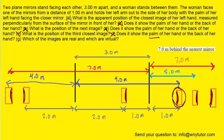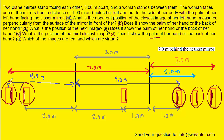And then finally to part G, which of the images are real and which are virtual? This part's easy. All of the images were located behind mirrors, and when images are located behind mirrors, they are indeed virtual. So that would be the correct answer to part G.